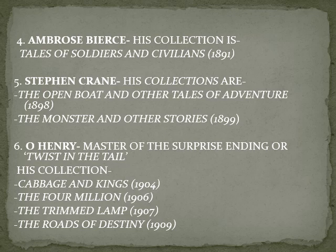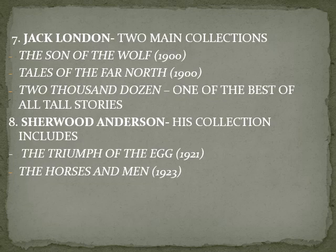O. Henry is a very important American writer, known as the master of the surprise ending, or the twist in the tale. His collections are The Cabbage and Kings, The Four Million, The Trimmed Lamp, and The Roads of Destiny. The seventh American writer is Jack London; his two main collections are The Son of the Wolf, 1900, and Tales of the Far North, 1900. Two Thousand Dozen is considered one of the best of all tall stories.